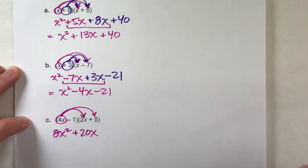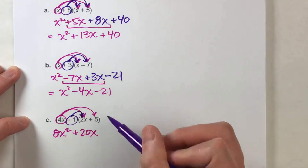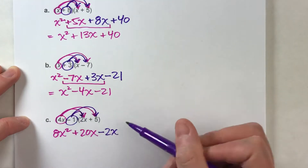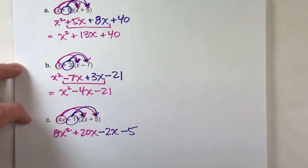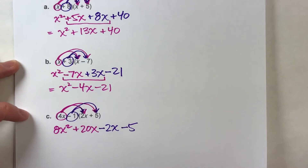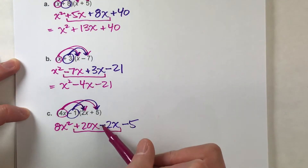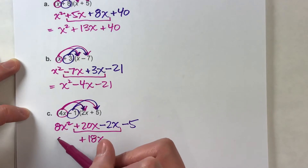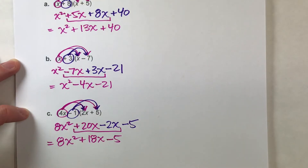We're done with the first term. Let's deal with that second term, negative 1. Negative 1 times 2x is negative 2x. Negative 1 times positive 5 is negative 5. So we've done all of the combinations we need to do to multiply. Now let's simplify — we've got some like terms in the middle: 20x minus 2x gives me positive 18x. There are no other x squared or regular numbers, so we keep those. Simplified: 8x squared plus 18x minus 5.